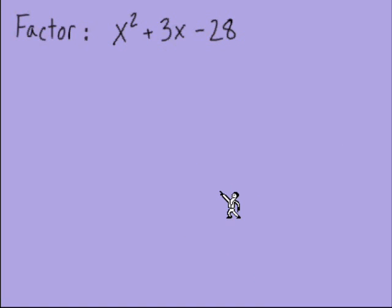This is our next example, factoring x squared plus 3x minus 28.